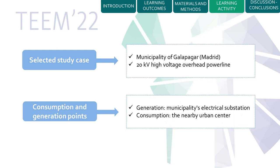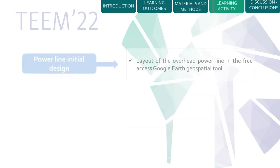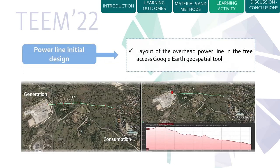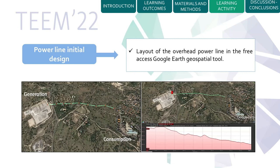The generation point will be the Municipality Electrical Substation, and the consumption point will be the NERVI Urban Center. In the initial design of the power line, we will use the free access Google Earth geospatial tool, in which the student will be able to design the line taking into account the different conditions of the ground.